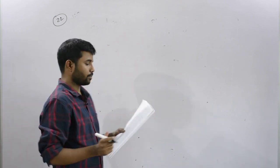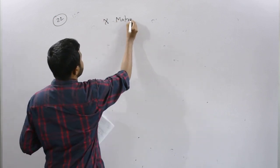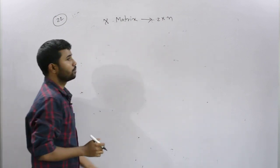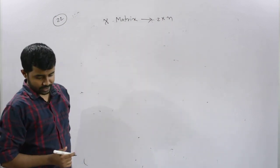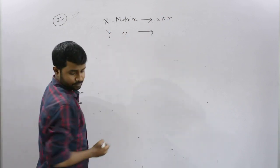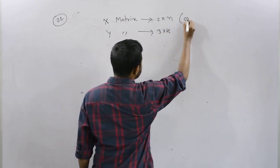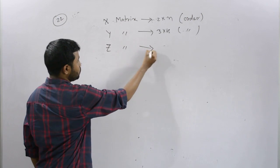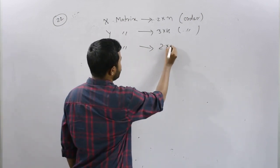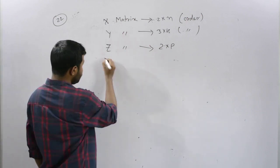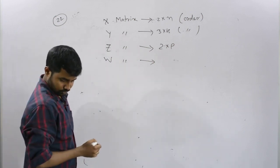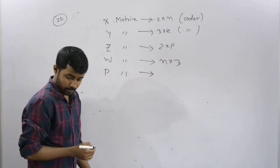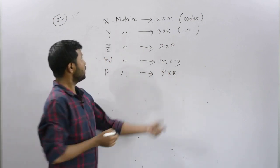Matrix X has order 2 into n. Matrix Y has order 2 into something. Matrix Z has order 2 into p. Matrix W has order n into 3, and matrix P has order p into k.